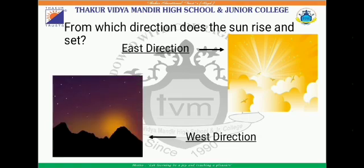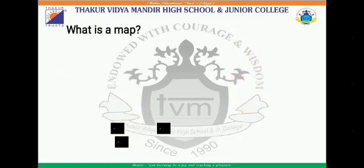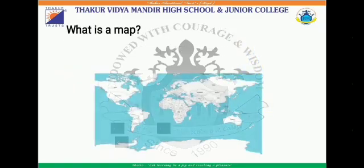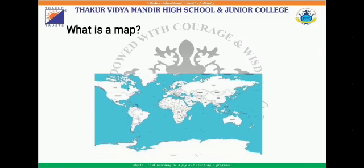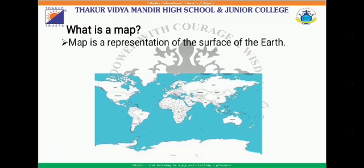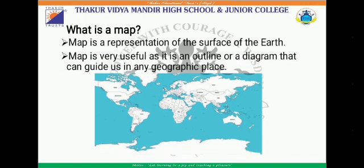When we travel to a new place, we are not aware of which direction we are travelling. Therefore, we use a map. Let us first understand what is a map. A map is the representation of the surface of the earth. It is very useful as it is an outline or a diagram that can guide us in any geographic place. In order to know a particular location, we use directions on the map.